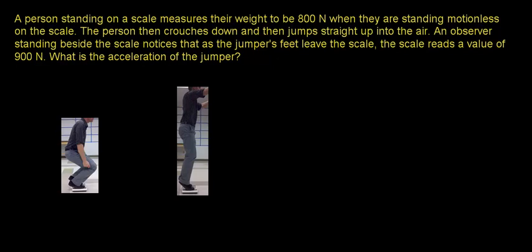In this video, we're going to figure out how fast a person can accelerate their body in the upward direction by jumping. To do so, we're going to use a very simple device to measure their acceleration, and that's going to be a bathroom scale. A textbook would normally phrase this question as such: a person standing on a bathroom scale measures their weight to be 800 newtons when they are standing motionless. The person then crouches down and jumps straight up. An observer notices as the jumper's feet leave the scale, the scale reads 900 newtons. The question is: what is the person's acceleration? We're going to assume that the acceleration is constant.